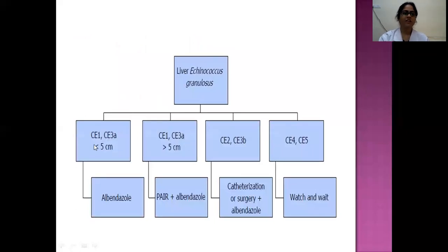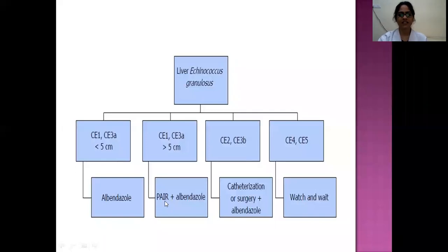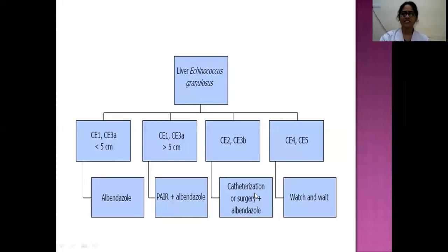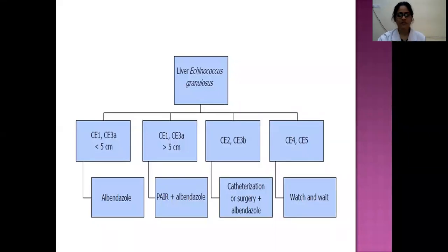Treatment overview: CE1 or CE3A cysts less than 5 cm — treat with albendazole alone; more than 5 cm — percutaneous drainage plus albendazole. CE2 or CE3B — catheterization along with surgery and adjunctive albendazole. CE4 and CE5 (inactive stages) — watchful waiting only.